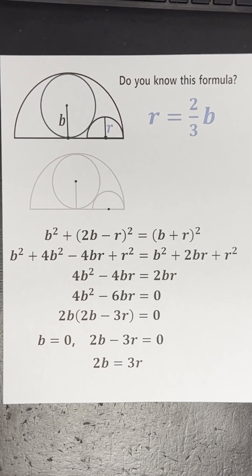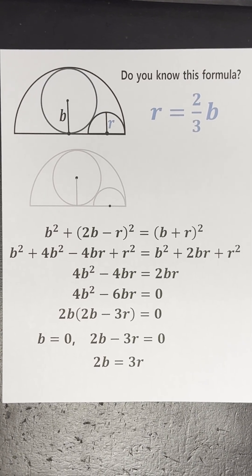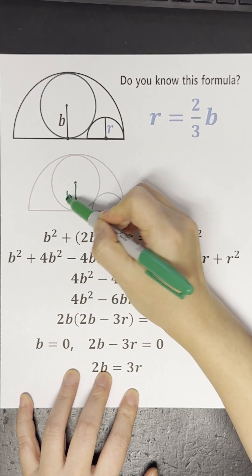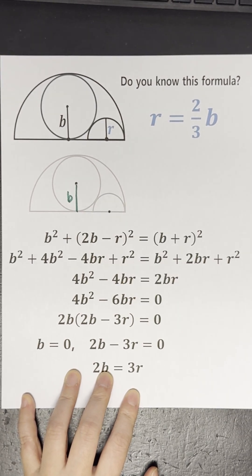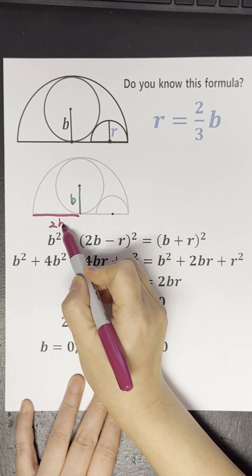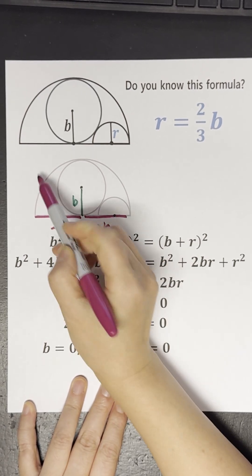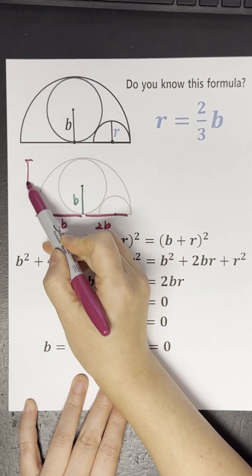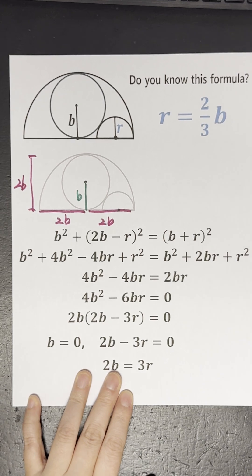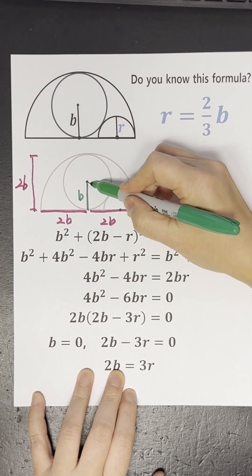Let's figure out how to arrive at the formula R equals 2 over 3B for this diagram. Looking at the figure, we can see that the radius of the large semicircle is 2B, because the radius of the enclosed circle is B. We can also find the lengths of a triangle.